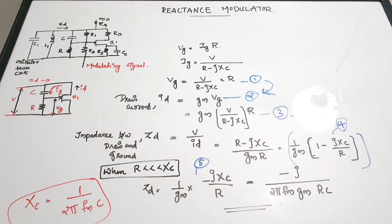In this video, we discussed two types of angle modulators: the varactor diode modulator and the JFET-based reactance modulator. We covered the circuit diagrams, working principles, and important equations for both. I'm hoping you found the video useful — if yes, please give it a thumbs up, share with your friends, and subscribe to the channel for more videos.